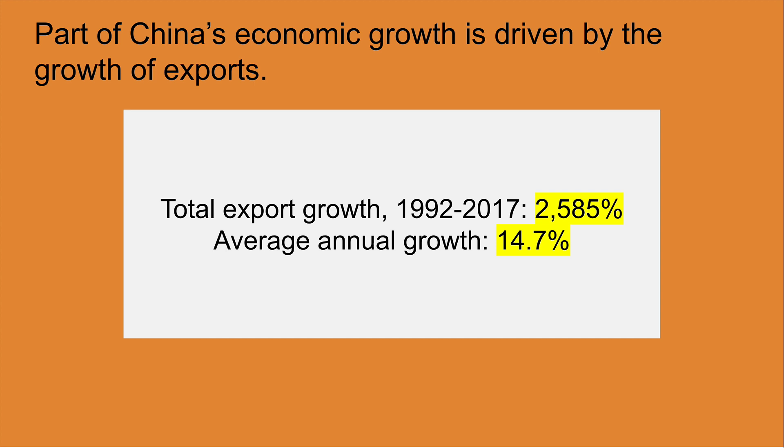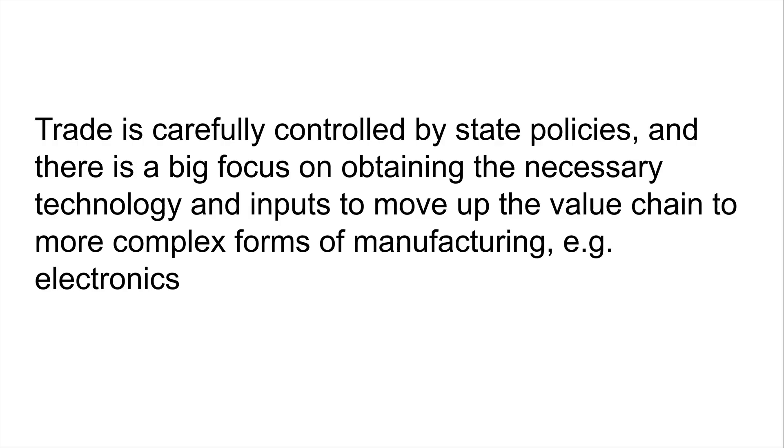Part of China's economic growth is driven by export growth. During the Maoist period, the economy was basically closed and exports were not a factor. During the reform period, total export growth was 2,585% from the early 1990s — an average year-over-year export growth of 14.7%. Trade is very carefully controlled by state policies, with a huge focus on obtaining the necessary technology and inputs to move up the value chain into more complex forms of manufacturing like electronics.